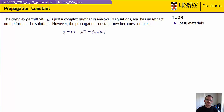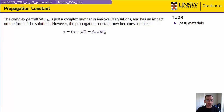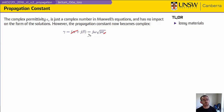So gamma, which is now the propagation constant, is alpha plus j beta, or j omega times the square root of mu epsilon complex. When epsilon complex is purely real — so conductivity is zero — then the right-hand side is purely imaginary, alpha equals zero, and gamma equals j beta, which is exactly what we saw previously.